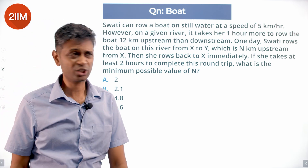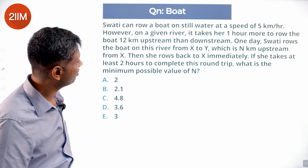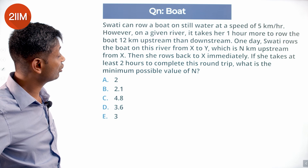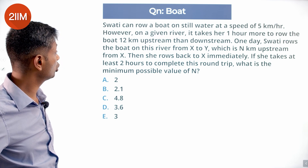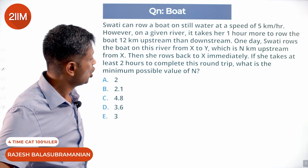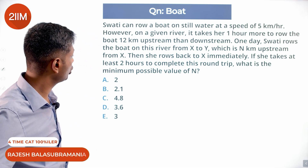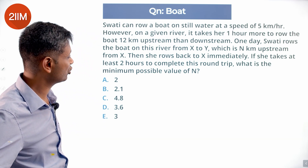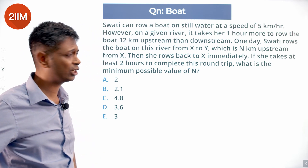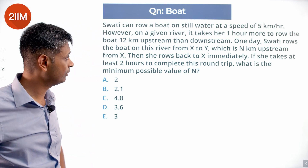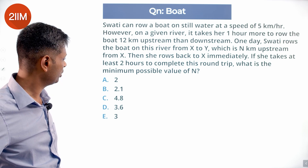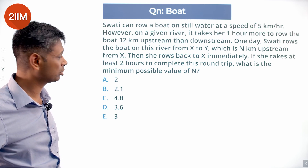Swathi can row a boat on still water at a speed of 5 km per hour. However, on a given river, it takes her one hour more to row the boat 12 kilometers upstream than downstream. One day, Swathi rows the boat on this river from X to Y, which is N kilometers upstream from X. Then she rows back to X immediately. If she takes at least two hours to complete this round trip, what is the minimum possible value of N?